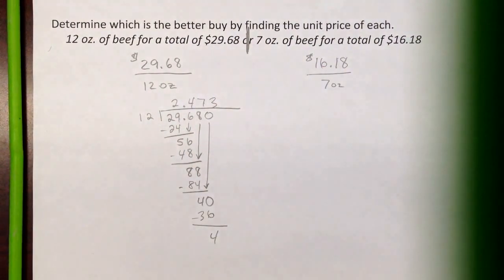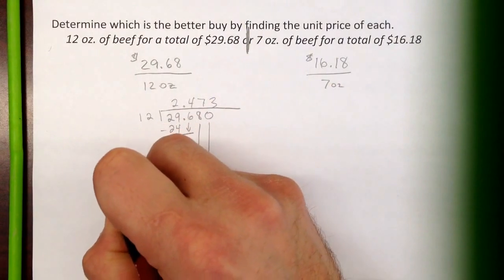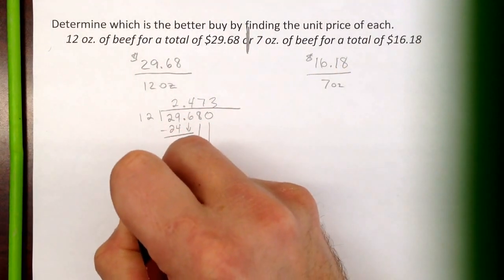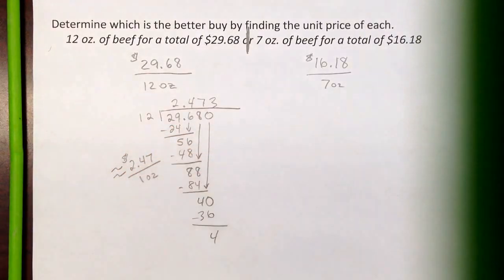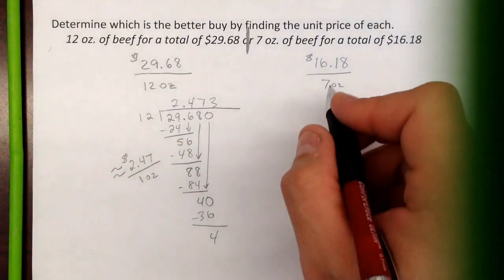So this one is approximately $2.47 per 1 ounce. That's a cost per ounce. Now let's try this one.